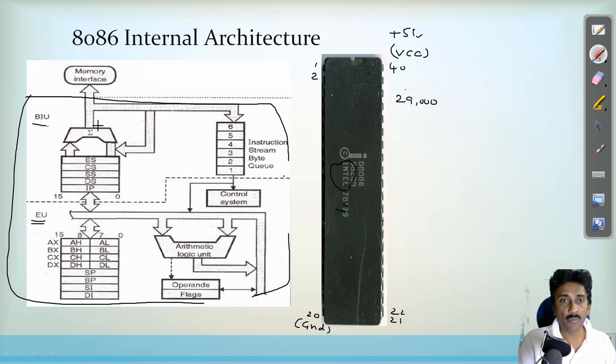In the bus interface unit, we have some very important parts like a dedicated adder or address summer. The name is not important but the point is that it generates a 20-bit address using this adder. You can see a similar ALU will be found here but this is not used for ALU operations. This is only used for adding purpose to generate 20-bit address only.